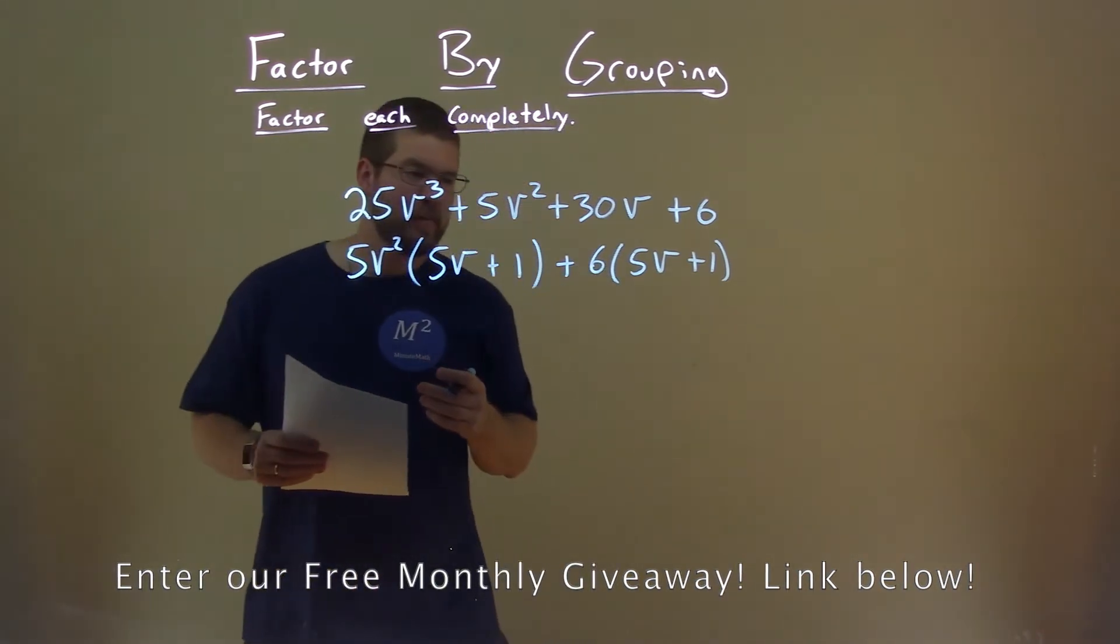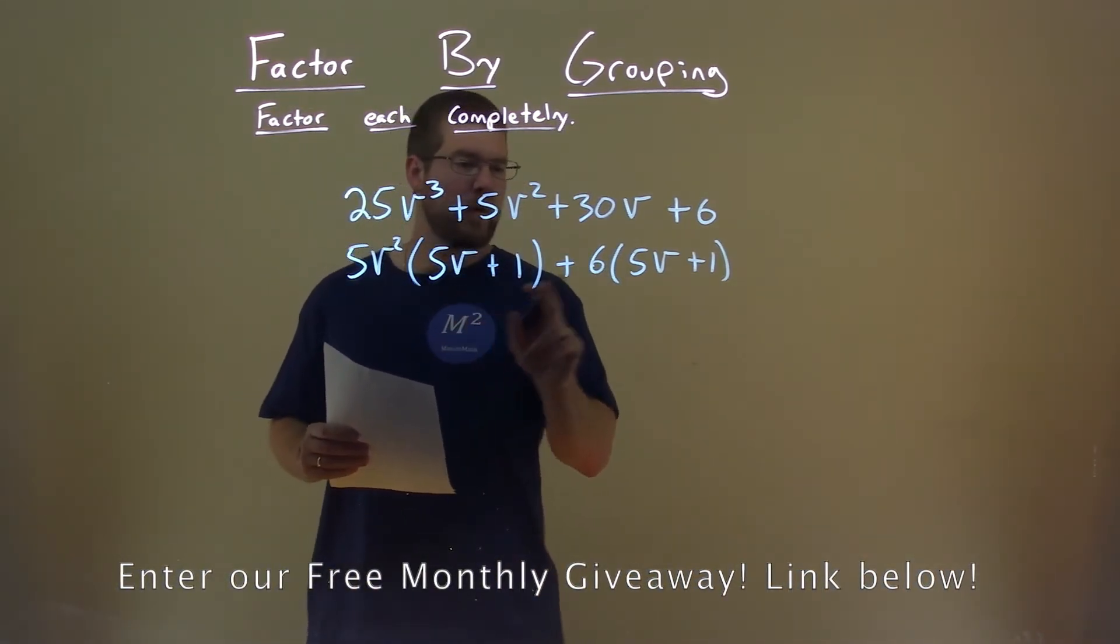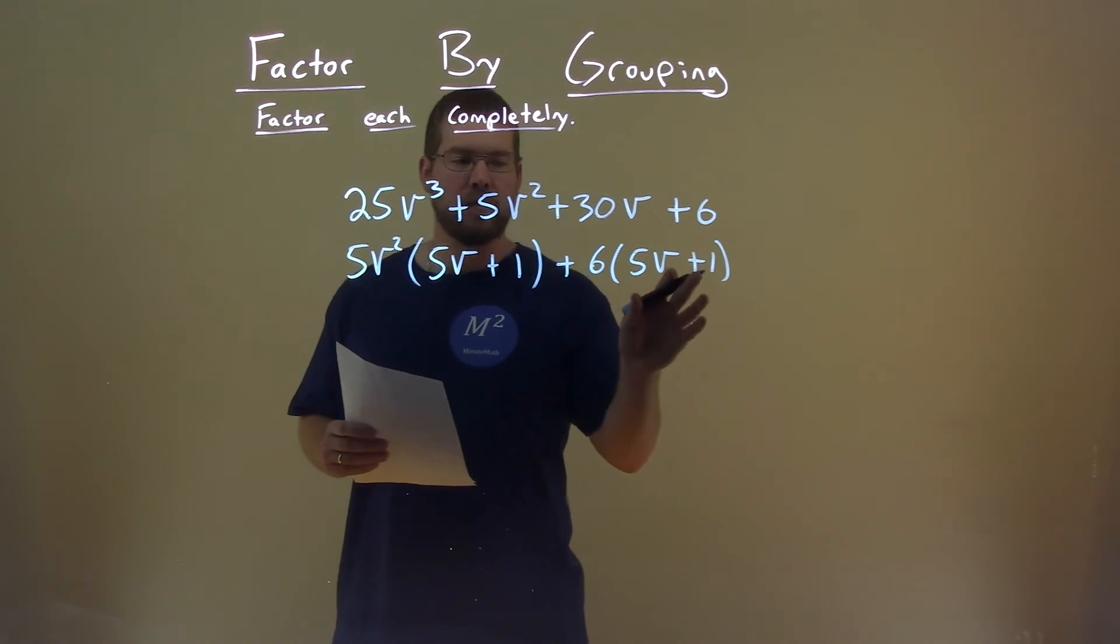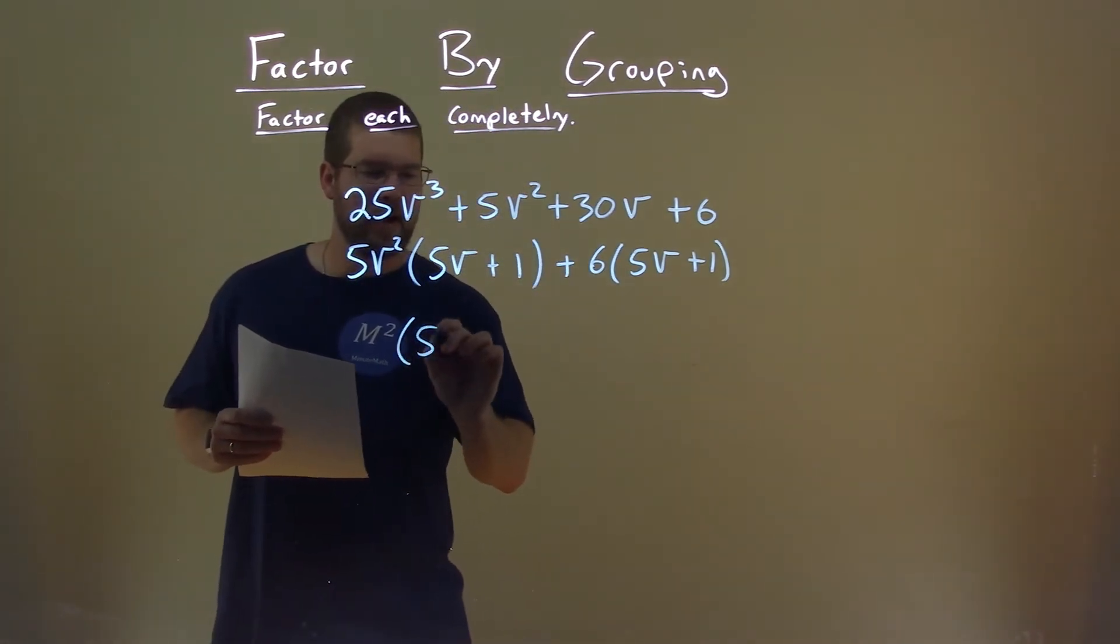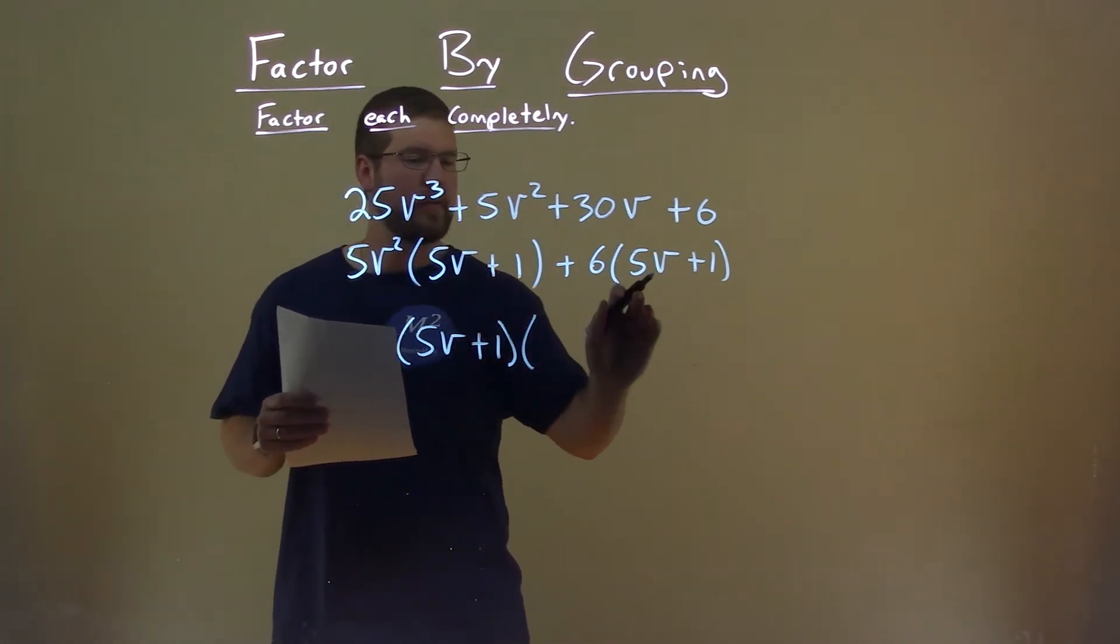All right, that's the beauty now. We have 5v plus 1 and 5v plus 1 in both parts. If we pull that out, we have 5v plus 1 from both parts that are being multiplied.